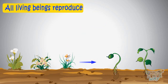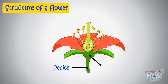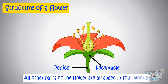Let's see how these seeds are produced. We learned the structure of a flower in our last assignment. This is the pedicel, which is a green color stalk. Then this broader part is a receptacle. And all other parts are arranged in four whorls.